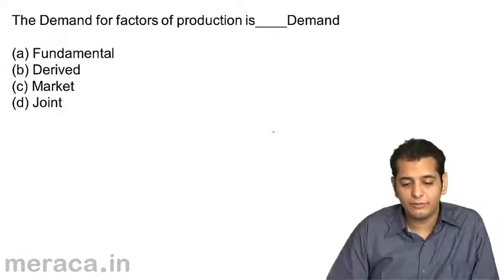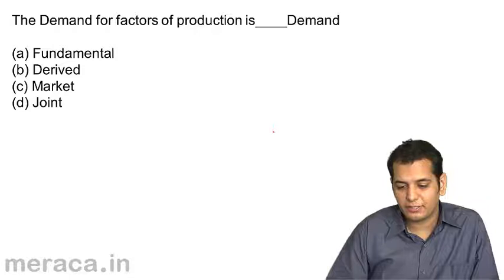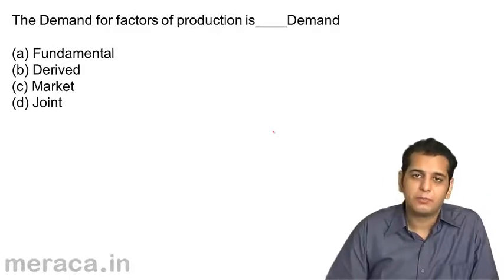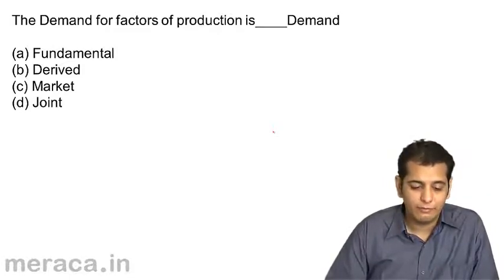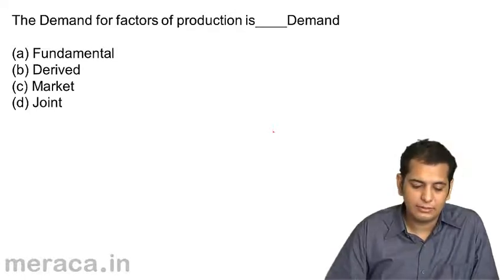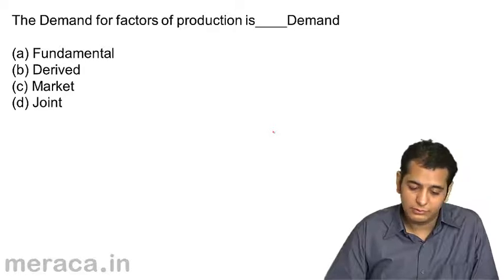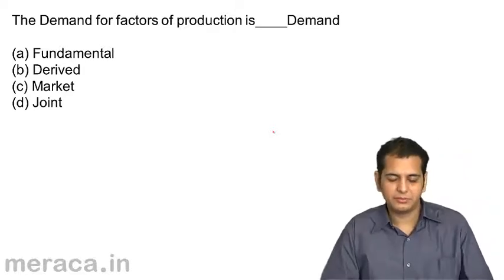Next, the demand for factors of production is ___ Demand. A. Fundamental Demand, B. Derived Demand, C. Market Demand, D. Joint Demand.